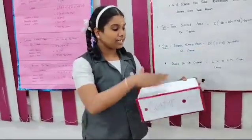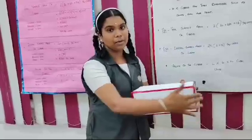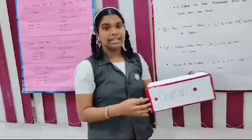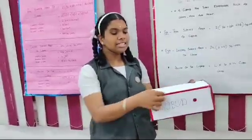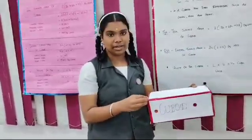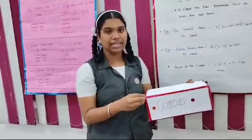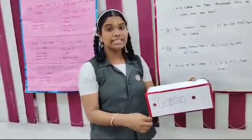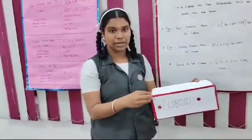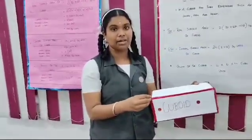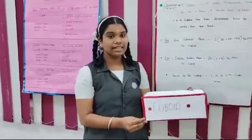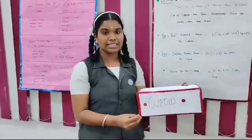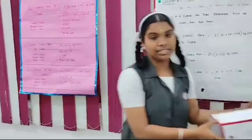A cuboid has six faces: front and back, up and down, and both sides. When two sides meet at one corner, it is called an edge. When three sides meet at one corner, it is called a vertex. There are eight vertices in the cuboid and there are 12 edges in the cuboid.